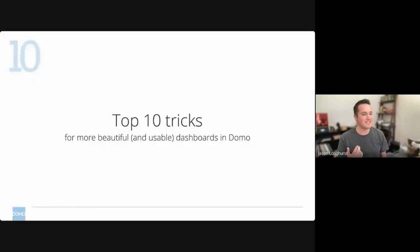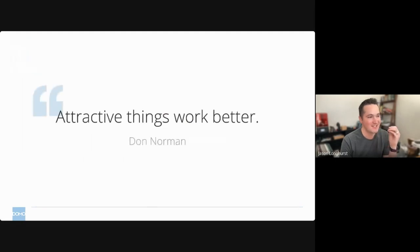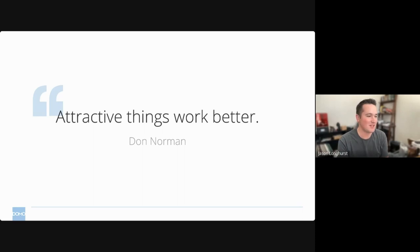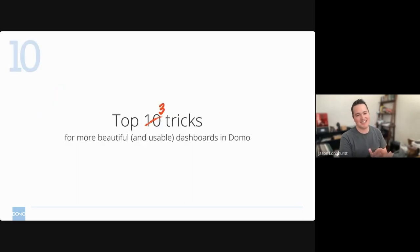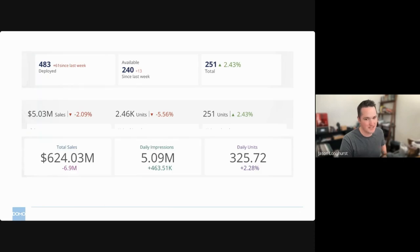I gave a presentation right before Domo Palooza on the top 10 tricks for beautiful dashboards in Domo — let's talk about three, because that's probably the time we have. Some of these are new since Domo Palooza. I wanted to piggyback off what Rachel was saying — attractive things work better, or at least we think they do, per Don Norman. The first trick is more dynamic KPIs. These are all KPI charts using the multi-value KPI chart, vanilla in Domo, and they all look very different — we're just using different chart properties and options. I had a ton of people come to me after the demo I did back in March about this.